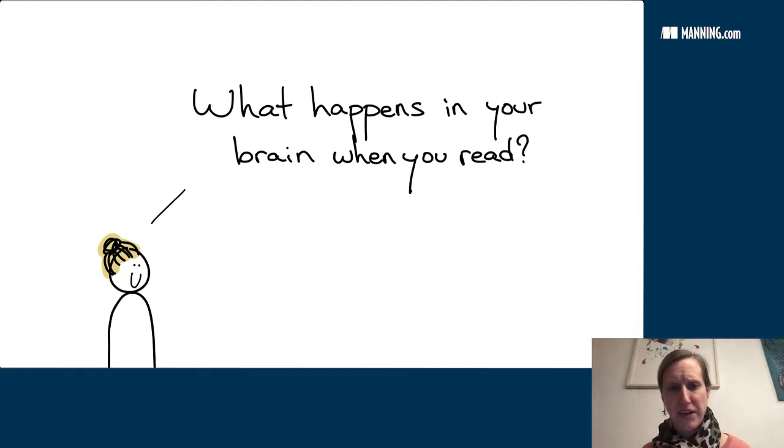What happens in your brain when you read code? And what do we already know from what happens in your brain when you read text that we can use? We don't have to reinvent the wheel. People know this and we can just use what natural language already knows.